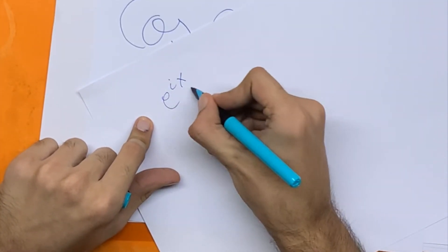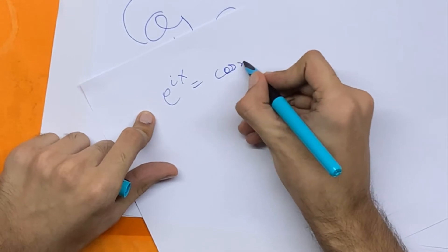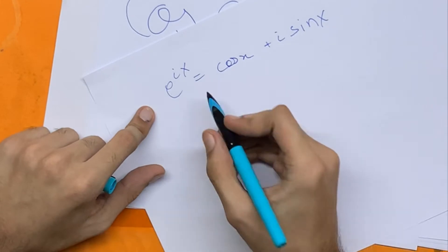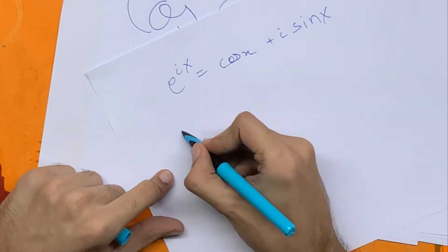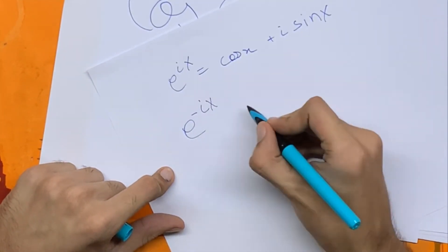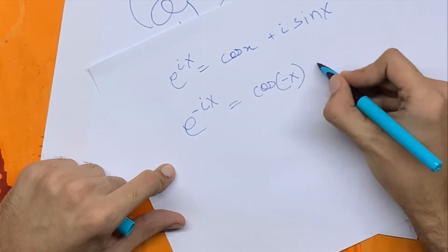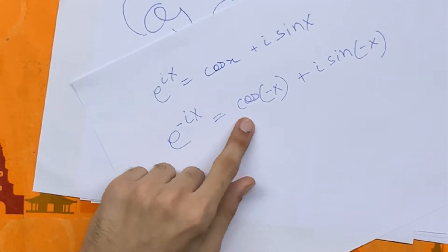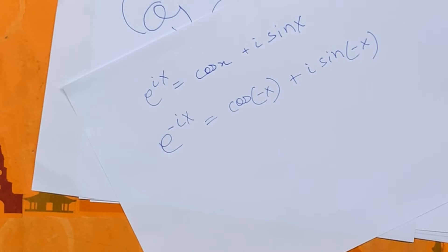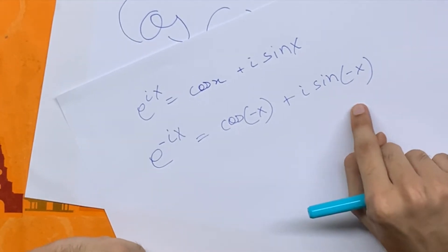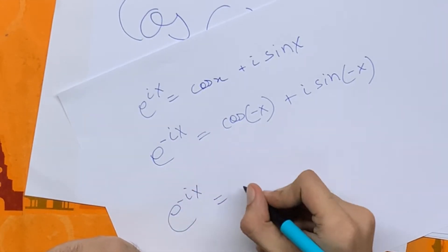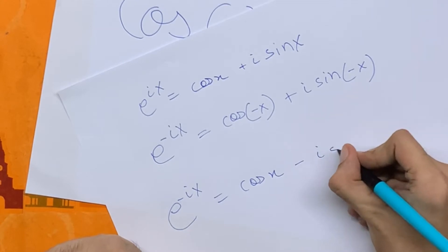Let me go ahead and write down what e to the power ix is — it is cos of x plus i times sine of x. Now using this, if we plug in minus x instead of x, we'll have e to the power minus ix is equal to cos of minus x plus i times sine of minus x. Because cos is an even function, cos of minus x is the same as cos of x. But sine is an odd function, so we get e to the power minus ix is equal to cos x minus i times sine of x.